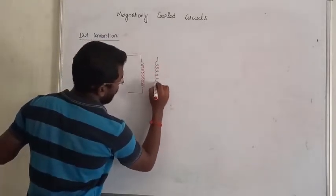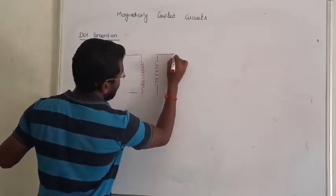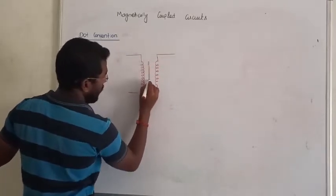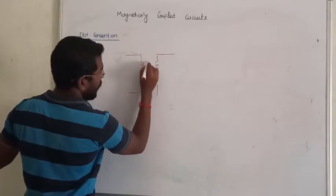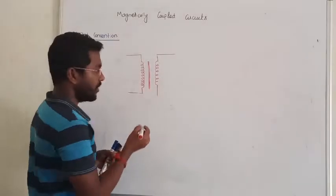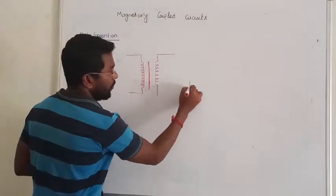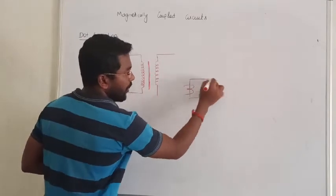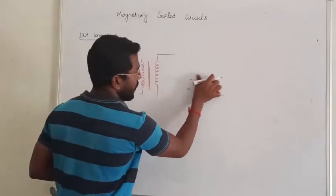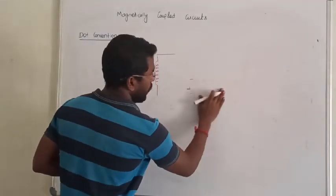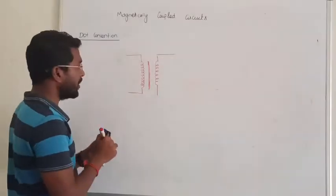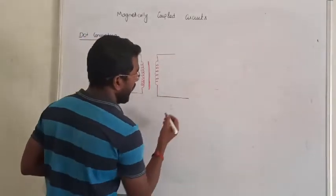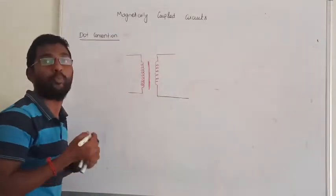We take the two coils of the transformer. Replace and draw the equivalent circuit. That is how we are representing it. Now we are going to identify the polarity.